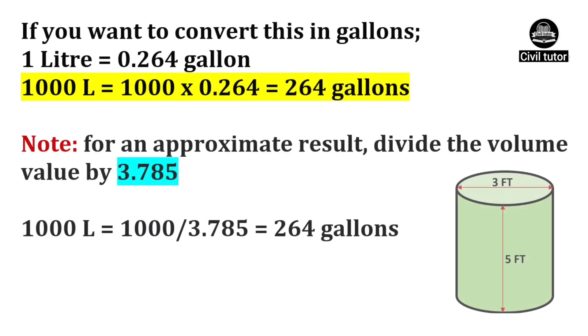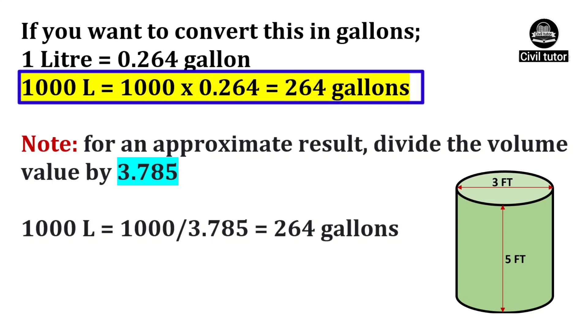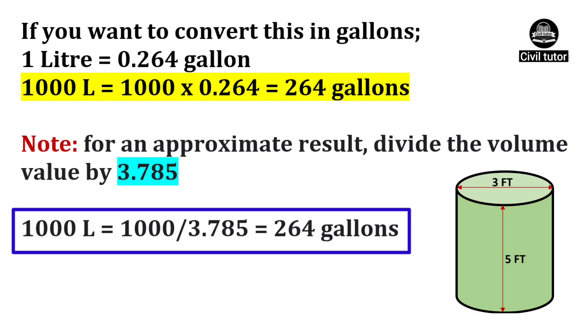If you want to convert this in gallons, 1000 liter will be equal to 1000 into 0.264, which will be equal to 264 gallons. This can also be calculated by dividing the volume in liters by a value 3.785.